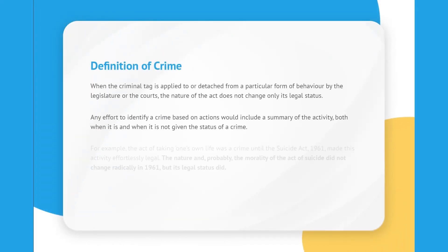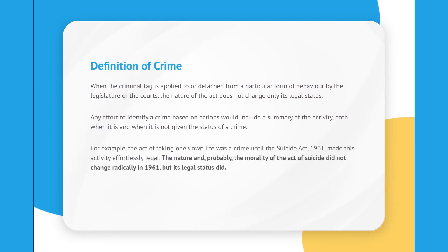When the criminal tag is applied to or detached from a particular form of behavior by the legislature or the courts, the nature of the act does not change — only its legal status. Any effort to identify a crime based on actions would include a summary of the activity, both when it is and when it is not given the status of a crime. For example, the act of taking one's own life was a crime until the Suicide Act 1961 made this activity legal. The nature and, probably, the morality of the act of suicide did not change radically in 1961, but its legal status did.